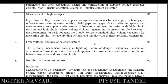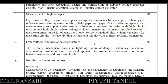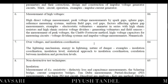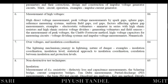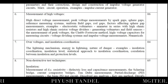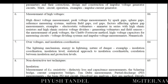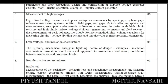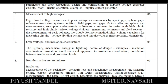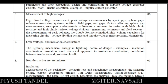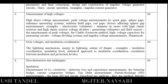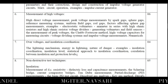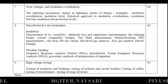Chapter seven covers overvoltage and insulation coordination, which is a very important factor when designing high voltage transmission lines or substations. Topics include the lightning mechanism, energy in lightning, the nature of danger, insulation coordination, insulation levels, the statistical approach to insulation coordination, and the correlation between insulation and protection levels. This chapter consumes four lectures.